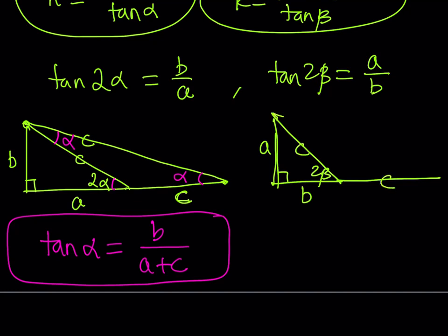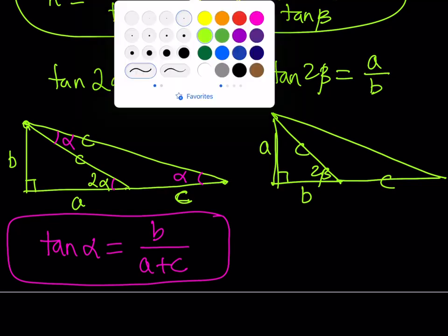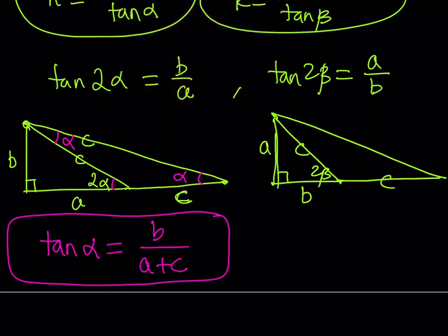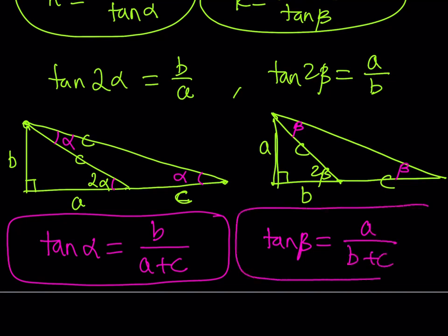And I'm going to be getting another isosceles triangle, just like the first one. And what am I getting from here? Well, this is supposed to be beta and beta. Therefore, tangent beta is equal to a over b plus c. Very similar to the first one. The letters are just different. Different place.